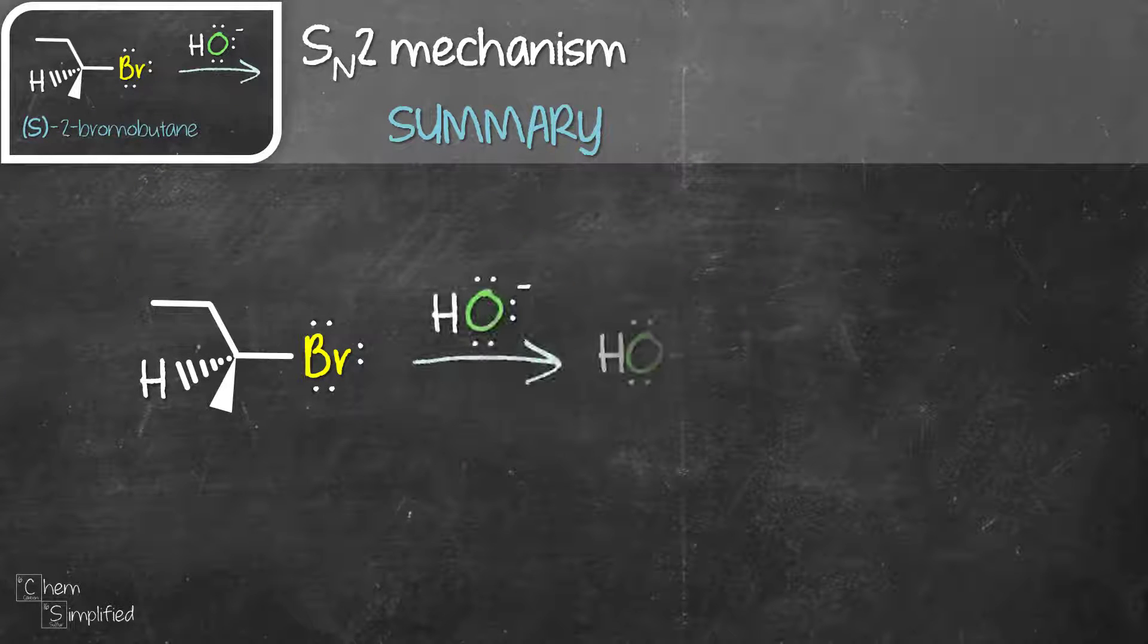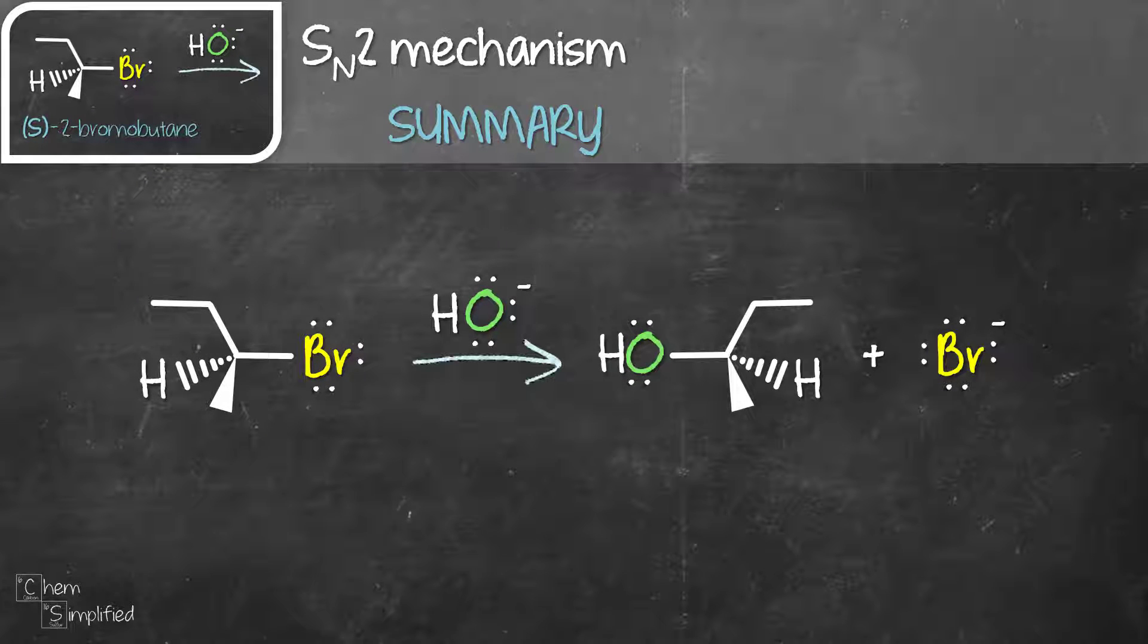To sum up the SN2 mechanism, the nucleophile attacks from behind the substrate at 180 degrees from the leaving group. The less bulky the nucleophile and the substrate, the faster the reaction will take place. The product that is formed in SN2 will be completely inverted.